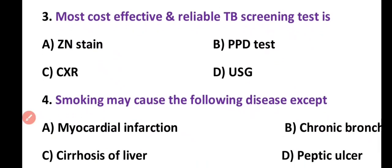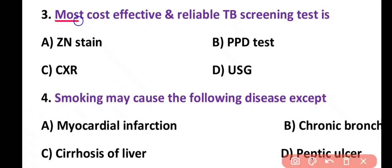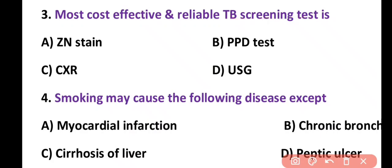Question 3. Most cost-effective and reliable TB screening test is: ZN Stain, PPD test, CXR test, or UCG. Correct answer is option A. ZN Stain test stands for Ziehl-Neelsen test and it is the most effective and reliable test for TB or mycobacterium tuberculosis.